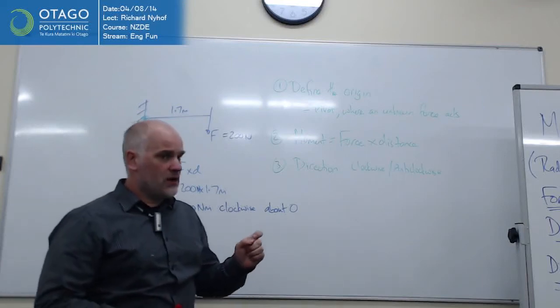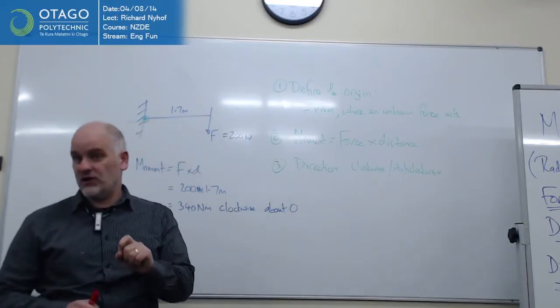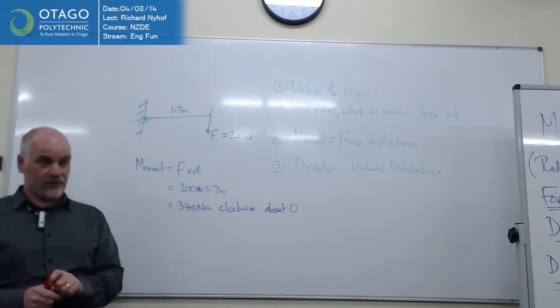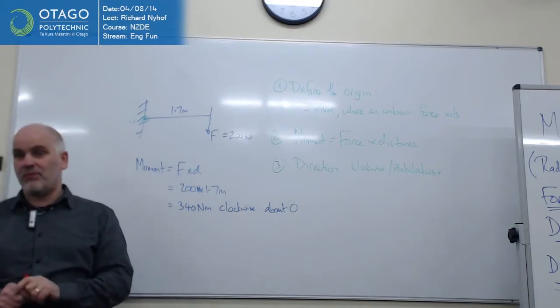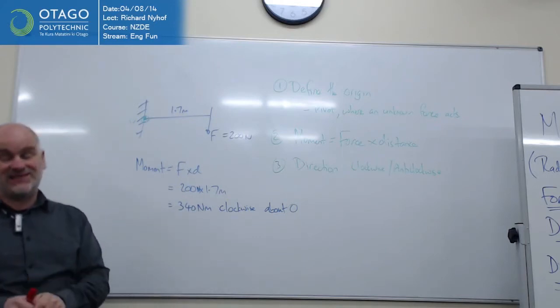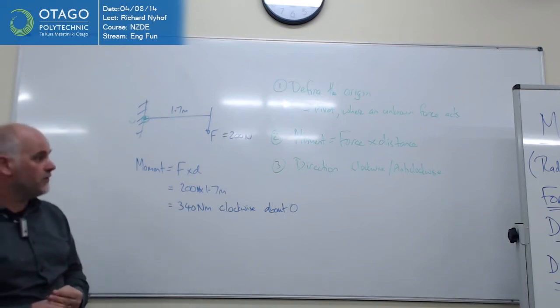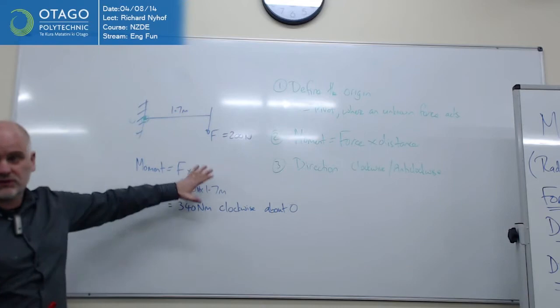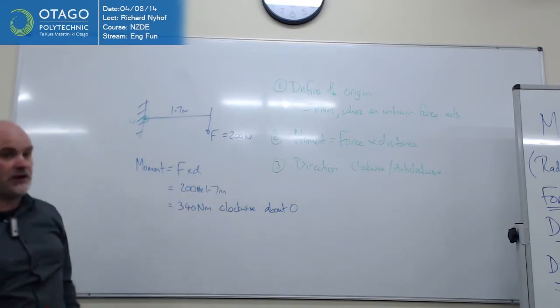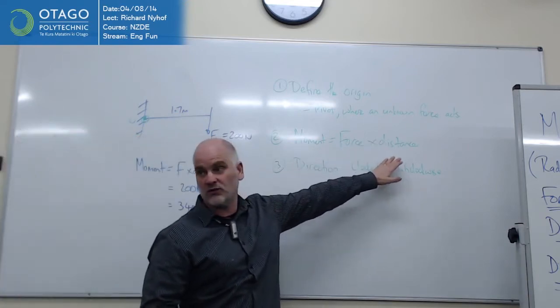So what I want to do next is just raise one little flag, which at this level you're not going to have to worry about. It's not going to come up, but it's something you should be aware of, and it will definitely come up as you start looking at your full diploma. So this is the calculation we just did for calculating the moment. And I said it was just force times distance.